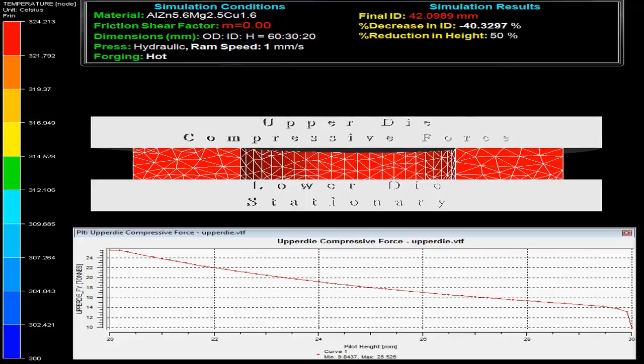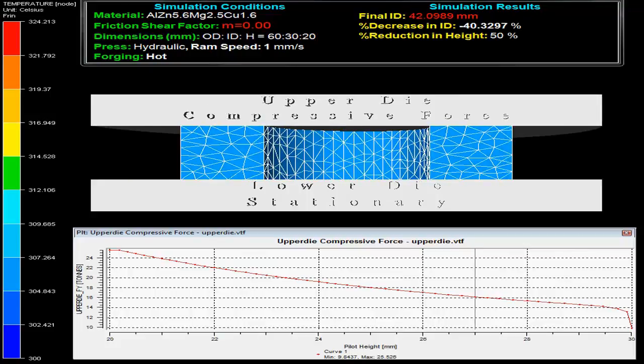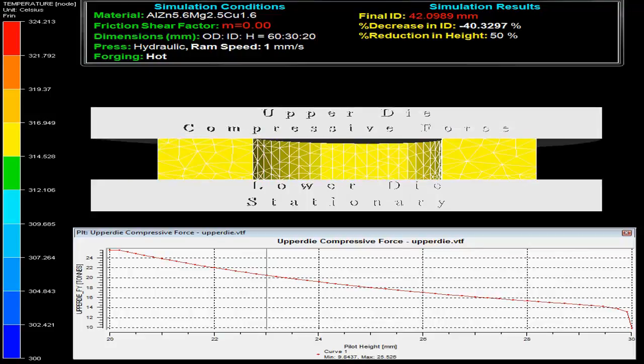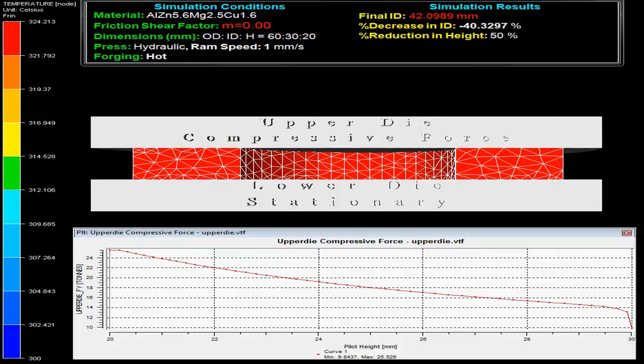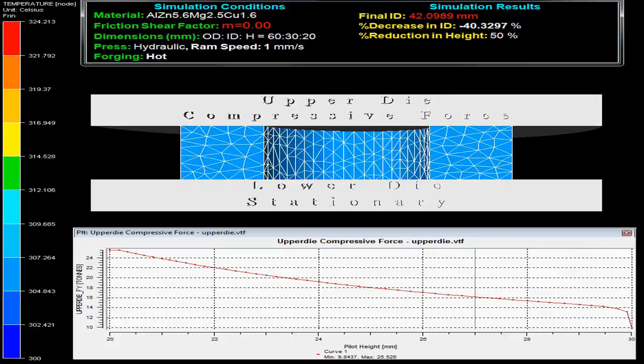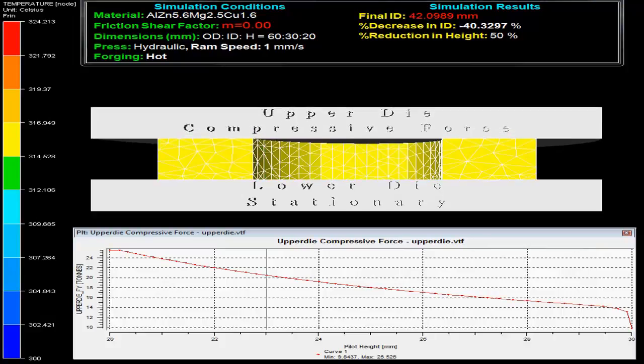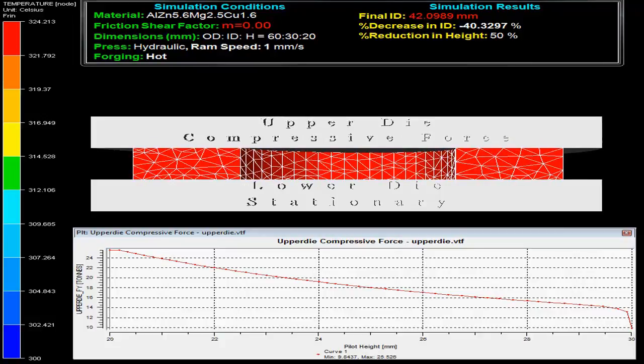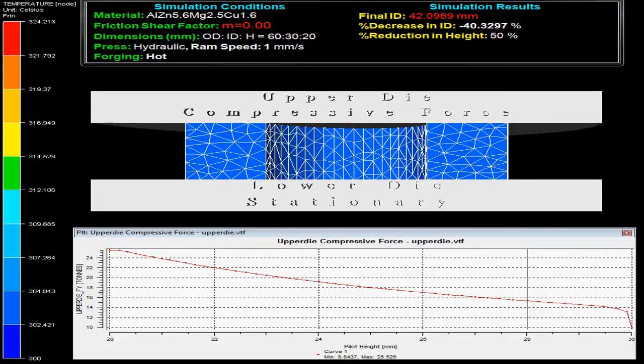On the top left corner in the video one can observe the simulation conditions. The specimen material is aluminum alloy with friction shear factor M as 0 and initial outer diameter to inner diameter to height ratio as 60 to 30 to 20.